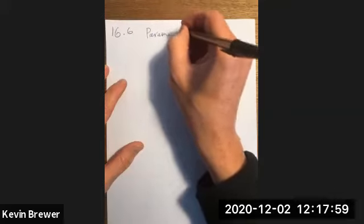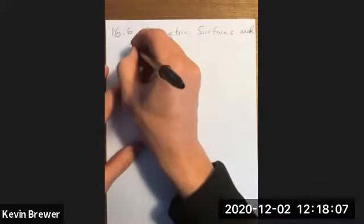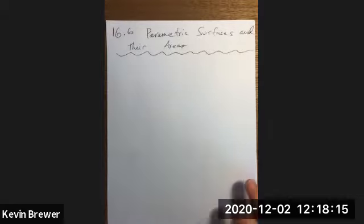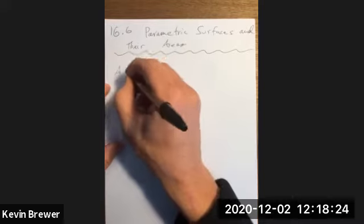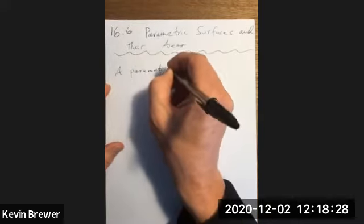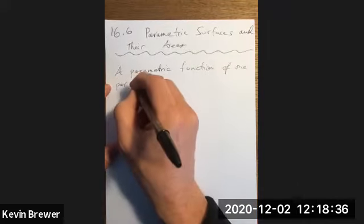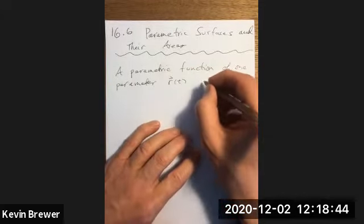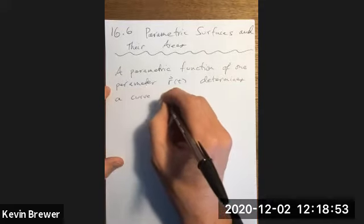In section 16.6, we discuss parametric surfaces and their areas. We've already seen parametrized curves, so a parametric function of one parameter, say r of t, determines a curve in space.